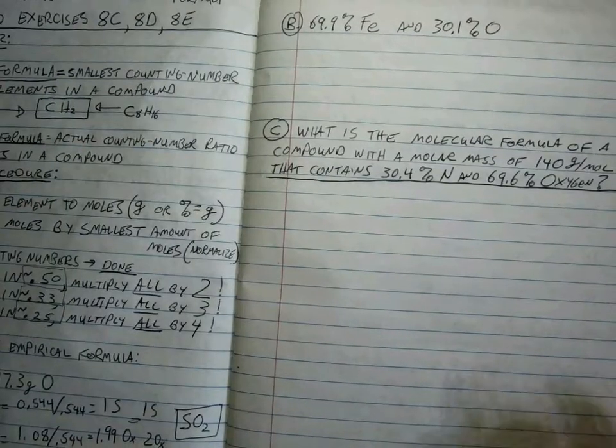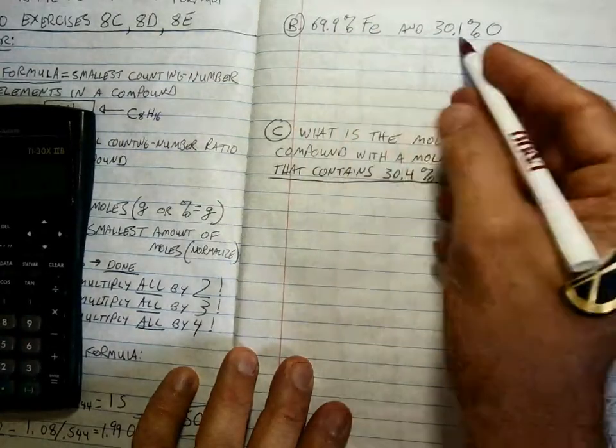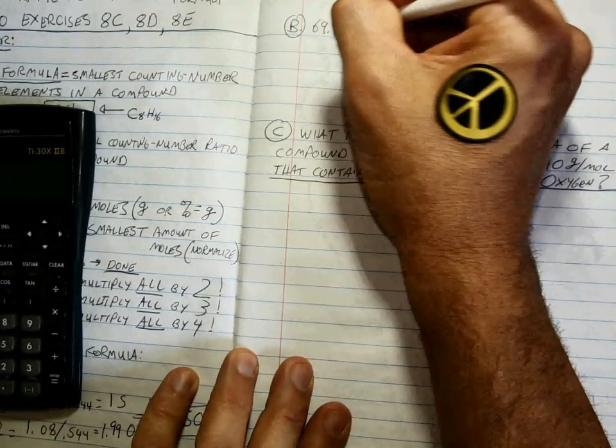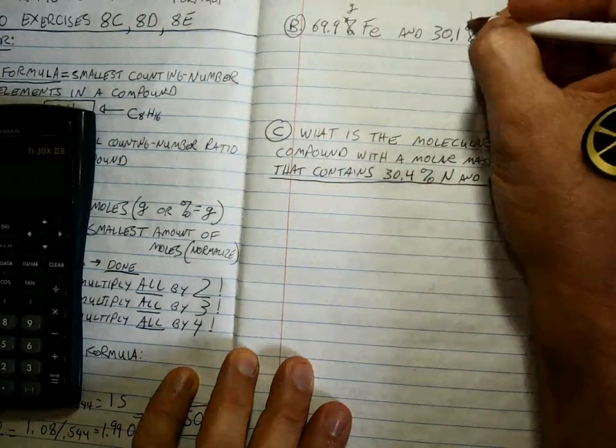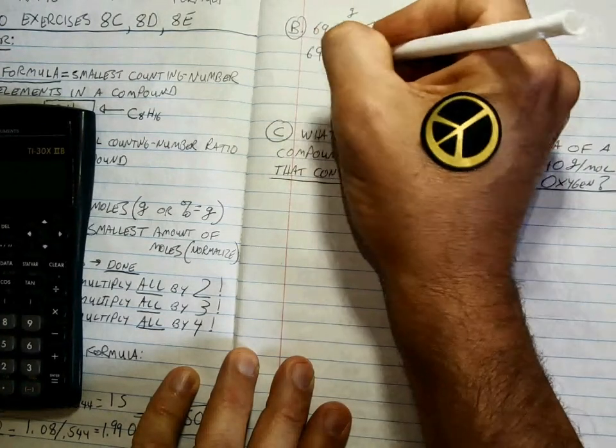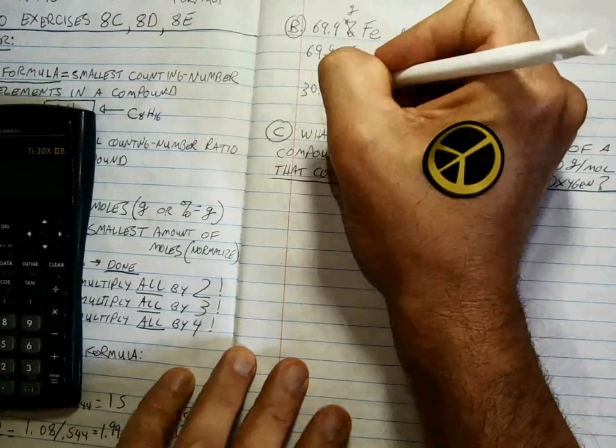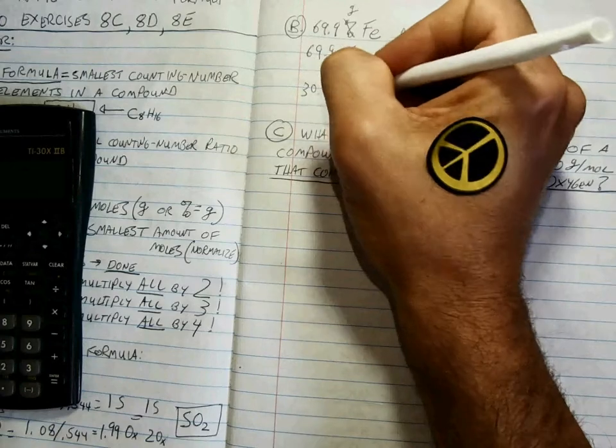All right, let's do a couple more. This time when we have percentage information, we just turn the percents into grams and then go through the same process. So 69.9 grams of iron and 30.1 grams of oxygen.